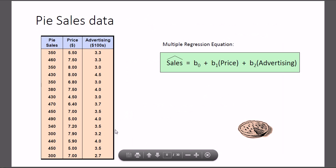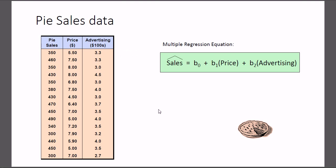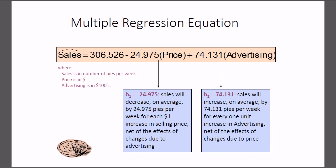To really understand that, we need to go back to the data — for example, 3.3 was actually $330 and 4 was $400. This is a reminder because you'll often notice that data is recorded in thousands, millions, or hundreds. You'll see this a lot in financial statements as well, so you should be aware of that.